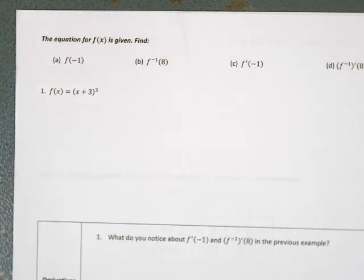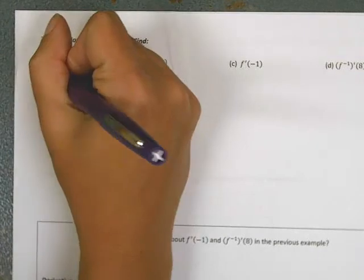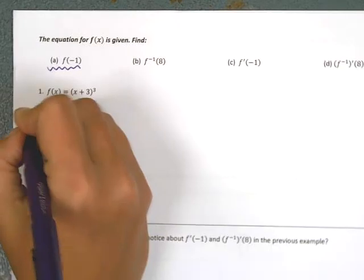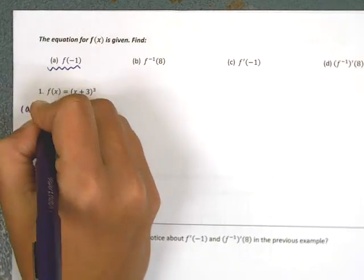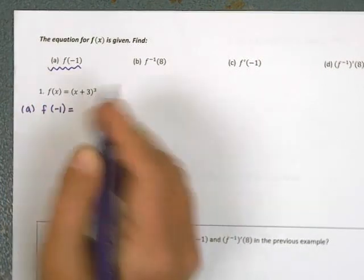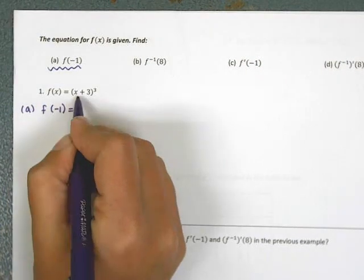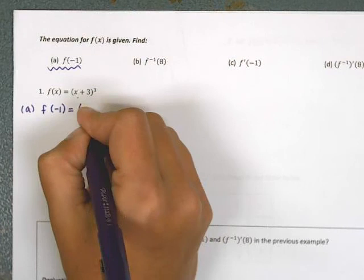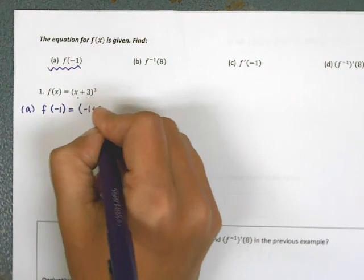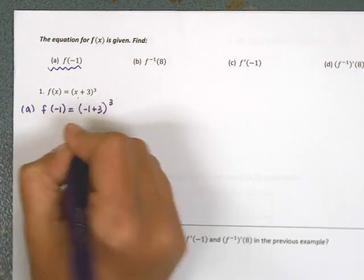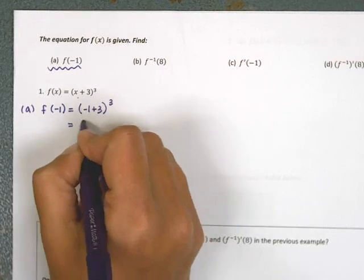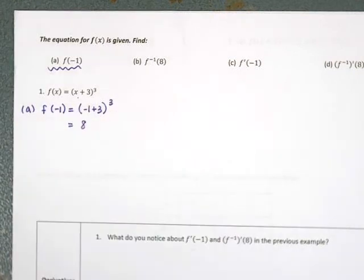For part a, find f(−1). f(−1) means take −1 and plug it into the original function instead of x. So I would have (−1 + 3)³ — negative 1 plus 3 is 2, and 2 cubed is 8.